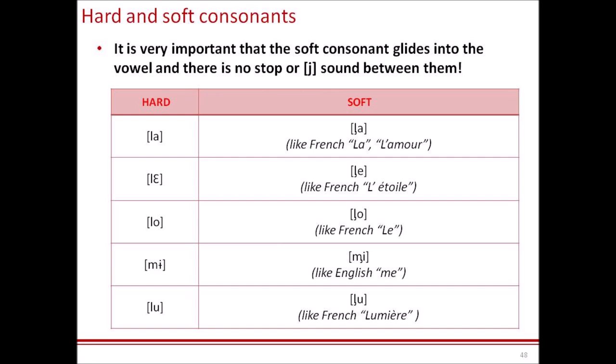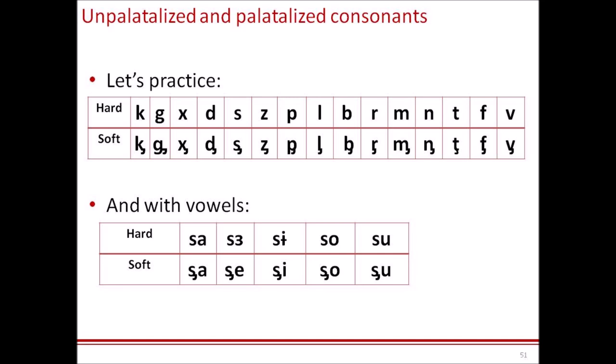Let's practice them — first the hard consonant, then the soft: КА–КЕ, ГА–ГЕ, ХА–ХЕ, ДА–ДЕ, СА–СЕ, ЗА–ЗЕ.